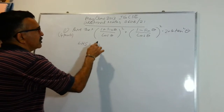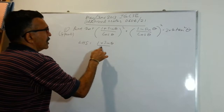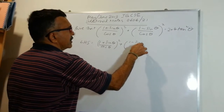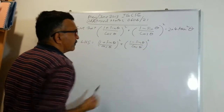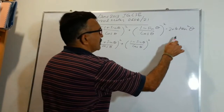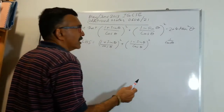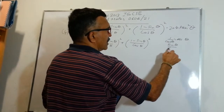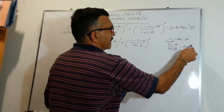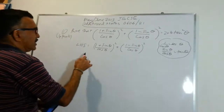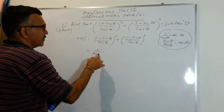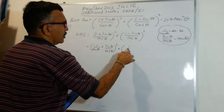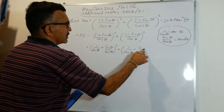The left-hand side will be equal to ((1 + sinθ)/cosθ)² + ((1 − sinθ)/cosθ)². Now, you have to know that 1/cosθ is secθ, and that sinθ/cosθ equals tanθ. So let's clean up a little bit. We have (1/cosθ + sinθ/cosθ)² + (1/cosθ − sinθ/cosθ)², which we can rewrite as (secθ + tanθ)² + (secθ − tanθ)².